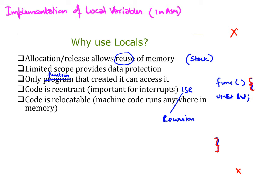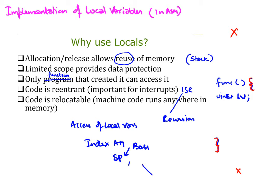Code is also relocatable. Access to local variables is done using indexed addressing mode, with the stack pointer as the base and an offset as the local variable binding. This means we won't access any variable relative to the PC or anything that would cause our code to not function if moved to another location. These are the good reasons for using local variables.